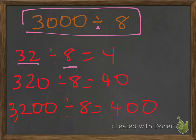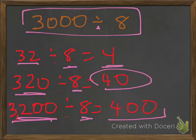32 divided by 8 gives us 4. 320 divided by 8 gives us 40. And then finally, 3,200 divided by 8 gives us 400. So our answer to this, 3,000 divided by 8, is about 400.